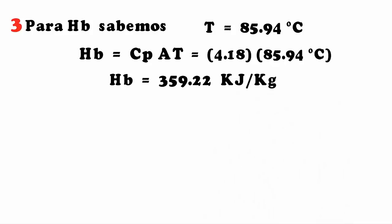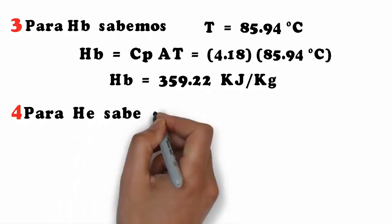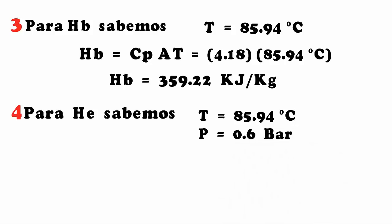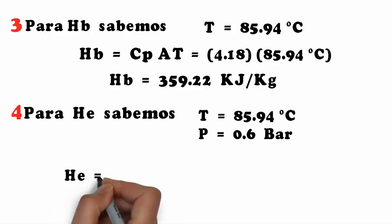For HE, we know stream E has a temperature of 85.94°C and exits at a pressure of 0.6 bar. Consulting the pressure tables, the saturated vapor enthalpy at 0.6 bar is 2653.5 kJ/kg.